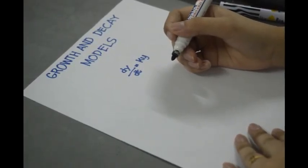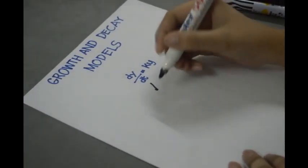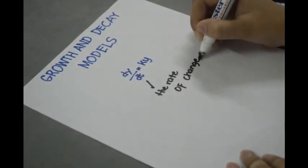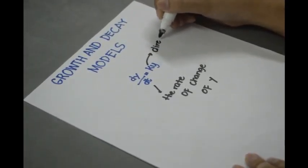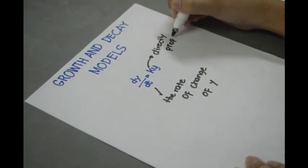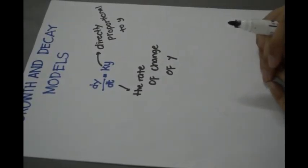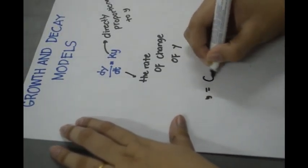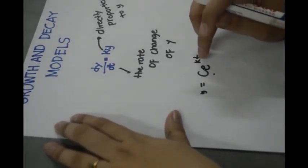Decay models. Consider the statement: the rate of change of some quantity y is directly proportional to y. This dy/dt is the rate of change of y, and y is directly proportional to y such that y is greater than 0 and y prime equals k times y for some constant k. Then y equals c times e raised to k times t, where c is the initial value of y and k is the proportionality constant.